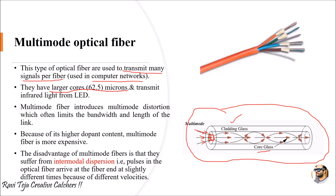The core diameter of multi-mode optical fiber is around 62.5 microns. In single mode, the signal is transmitted using a laser beam, whereas in multi-mode optical fiber, infrared light is transmitted using an LED — a light emitting diode concept.